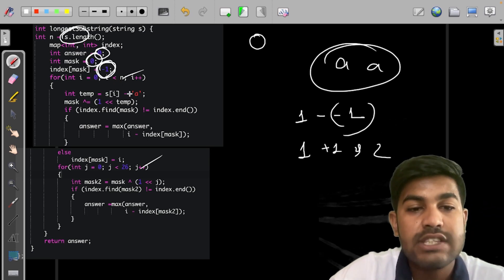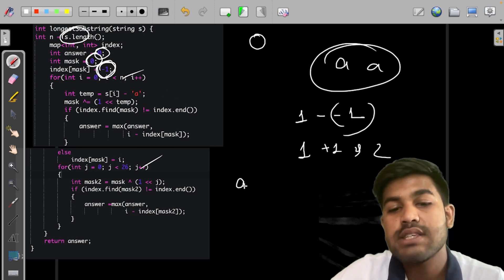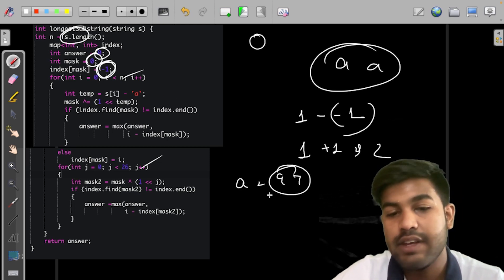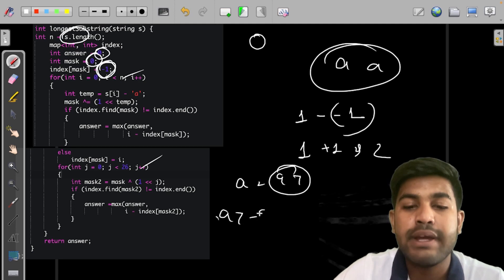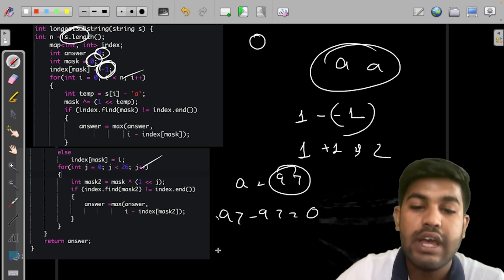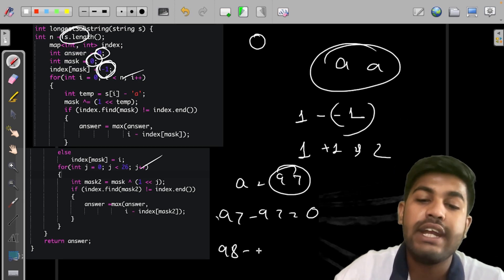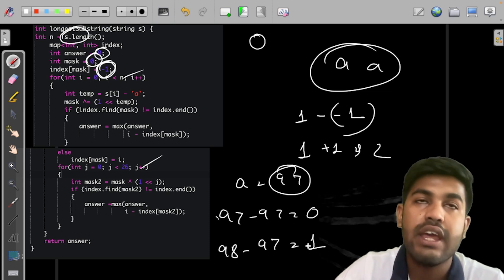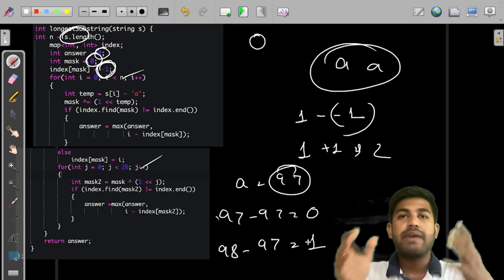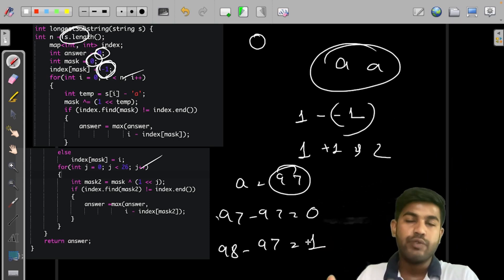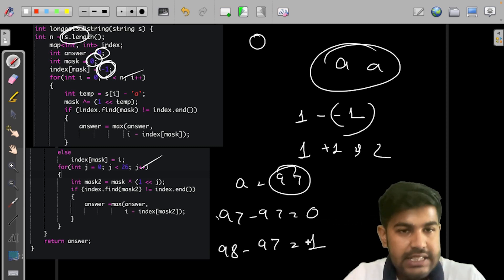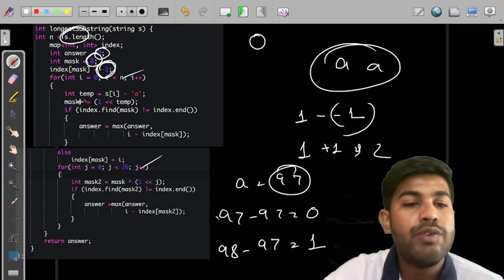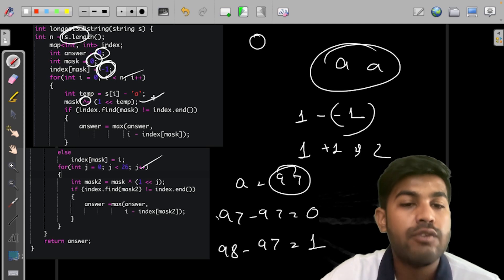Then, we are having S of i minus A. Why this? Because A has an ASCII value of 97. So, if we subtract 97 minus 97, that would make it 0. And B's value is 98. So, 98 minus 97 would make it 1. That would automatically map A with 0, B with 1, C with 2 and D with 3, and it goes on. Now, we would try to XOR it. XOR it would make it toggle.